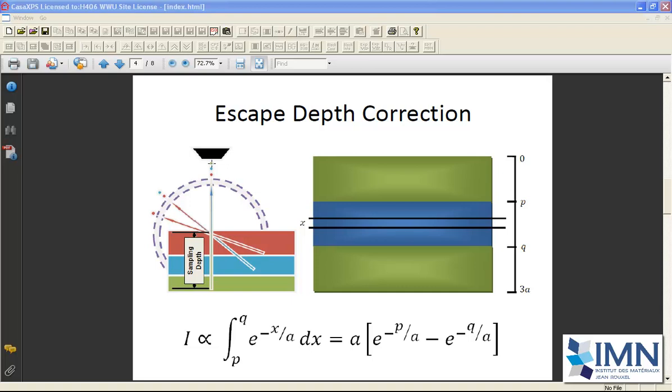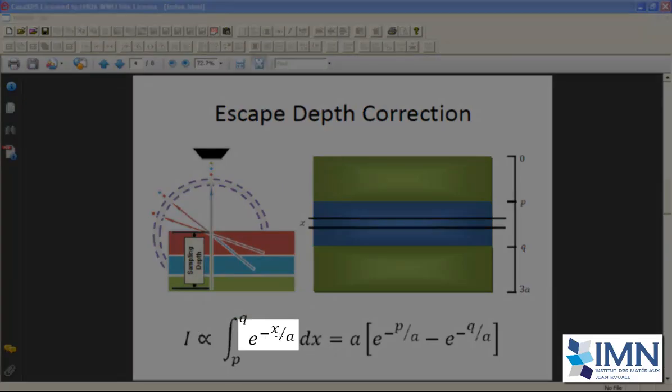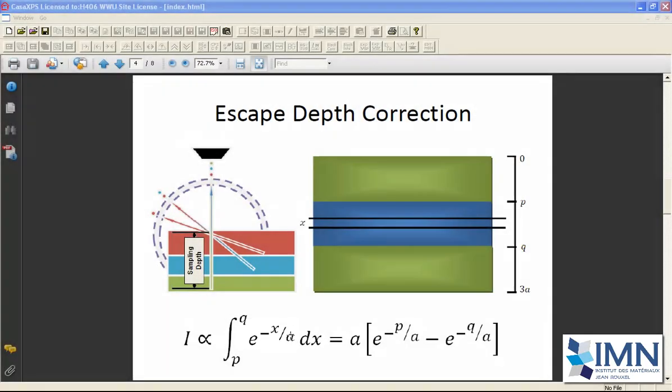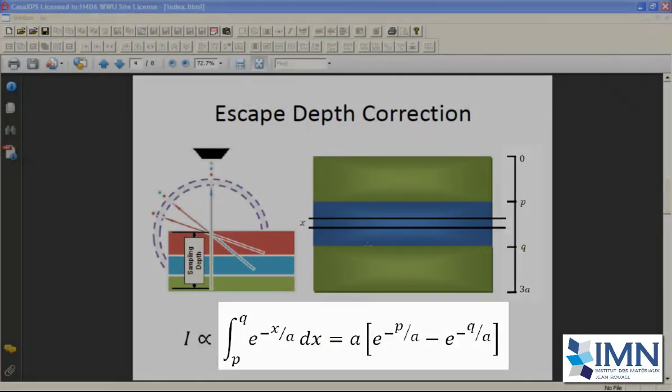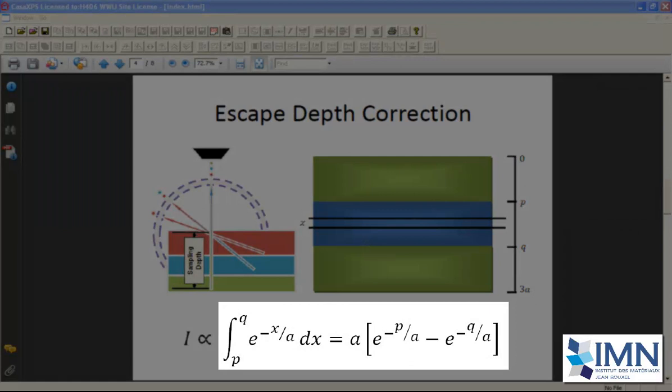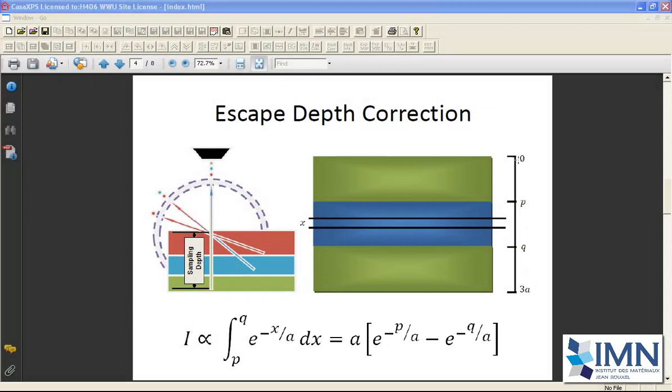But it does mean that the oxygen 1s signal is attenuated as a function of where the oxygen is in the sample. We have a model for working out how the intensity is altered as a function of depth within the sample, and that's this exponential model, which involves a parameter a, which is referred to as an attenuation length. And if we integrate from a depth of 0 through to 3a using this model, we can arrive at a conclusion, which is that 95% of the signal will derive from the top 3a's depth of the material.